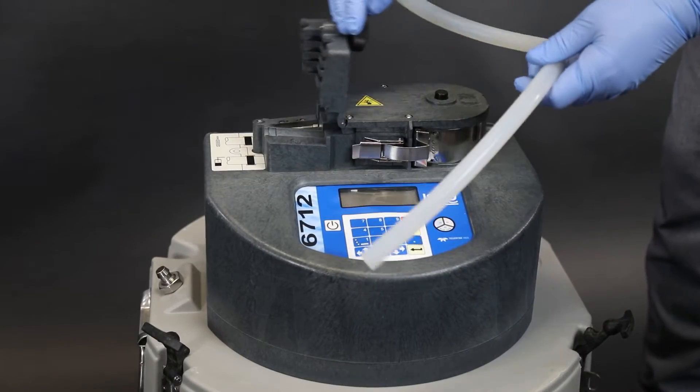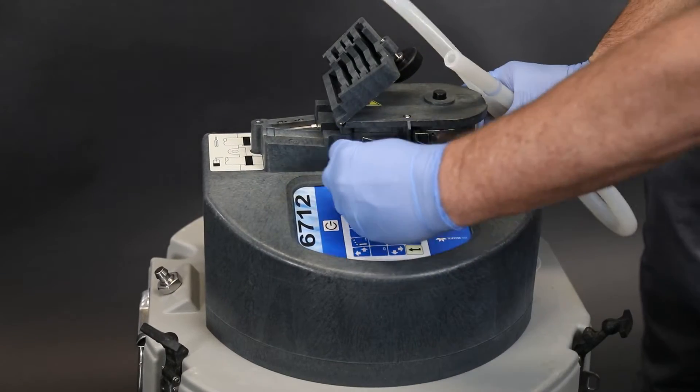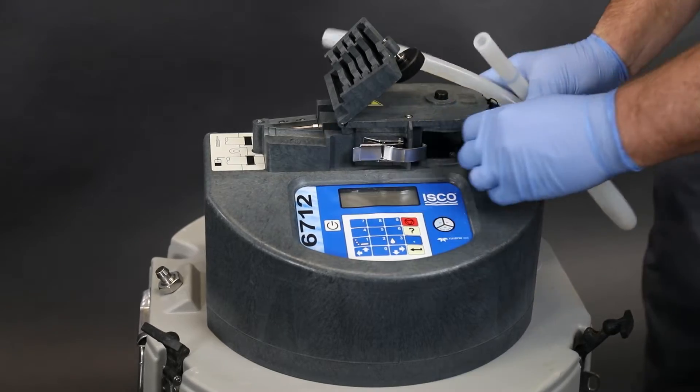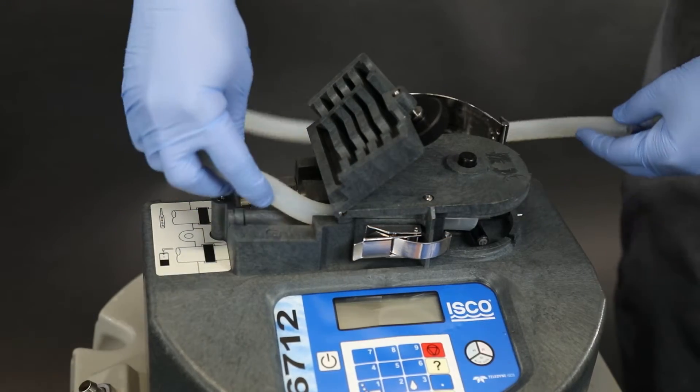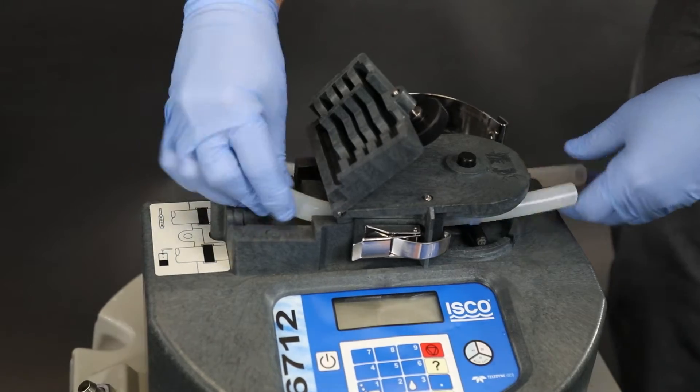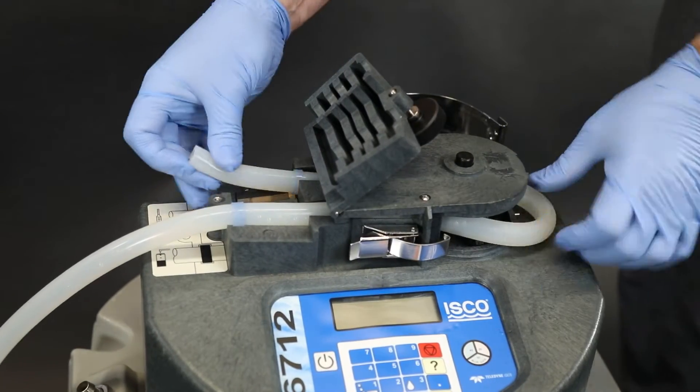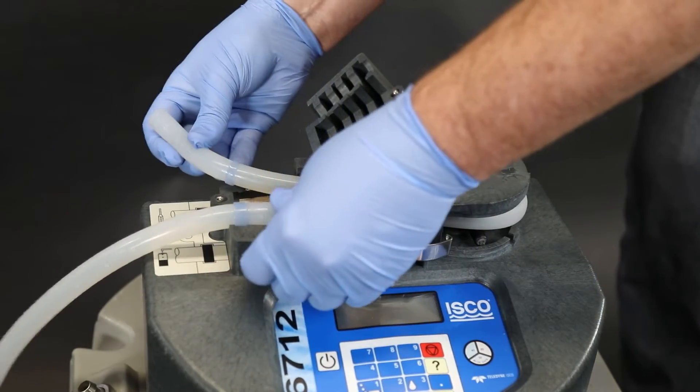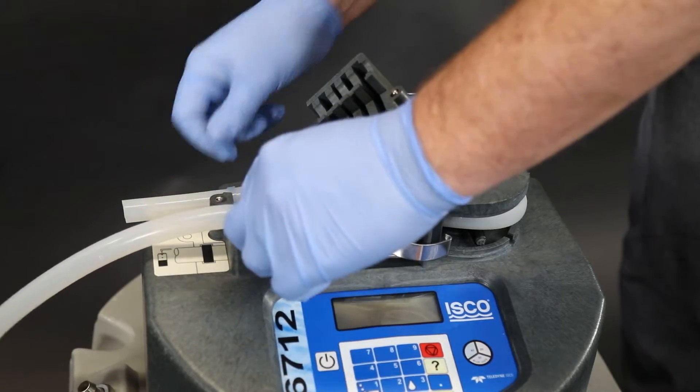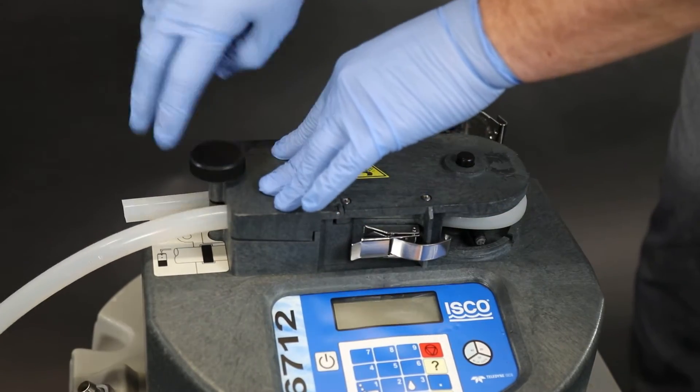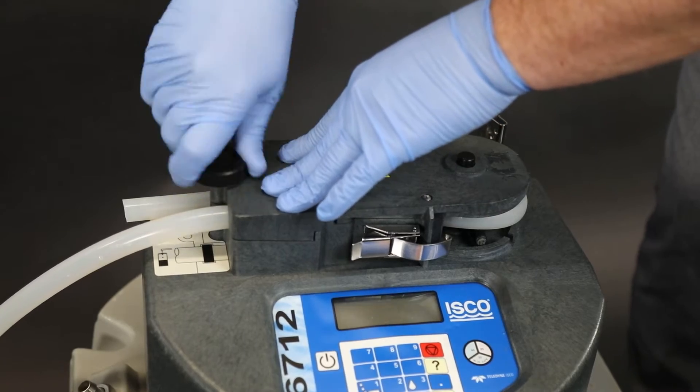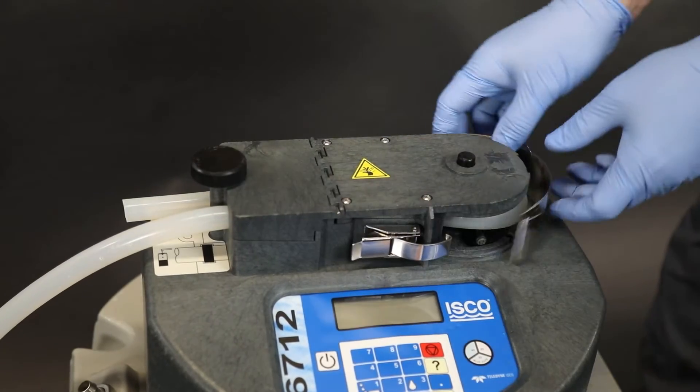To install the pump tubing, first unscrew the tube cover and release the clamp. Insert the shorter end of the pump tube as shown. Guide the tubing back through the tube housing and align the blue stripes with the notches here. Close the tube cover and screw it in, then lock the clamp.